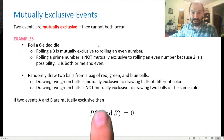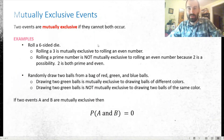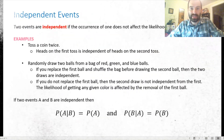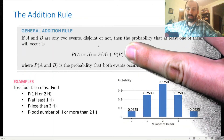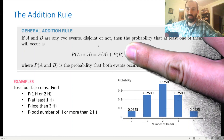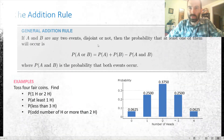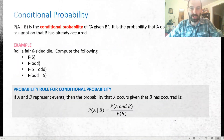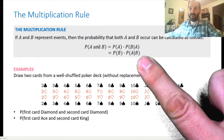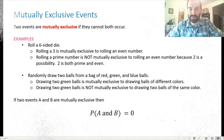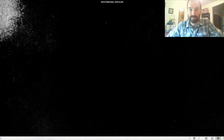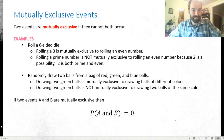If two events are mutually exclusive, P(A and B) = 0, which simplifies the addition rule to just P(A) + P(B). The multiplication rule simplifies similarly if events are independent. Do not confuse mutually exclusive with independent — they are completely different concepts. Something can be mutually exclusive but not independent, and vice versa. That's it for this video; see you in the next one.